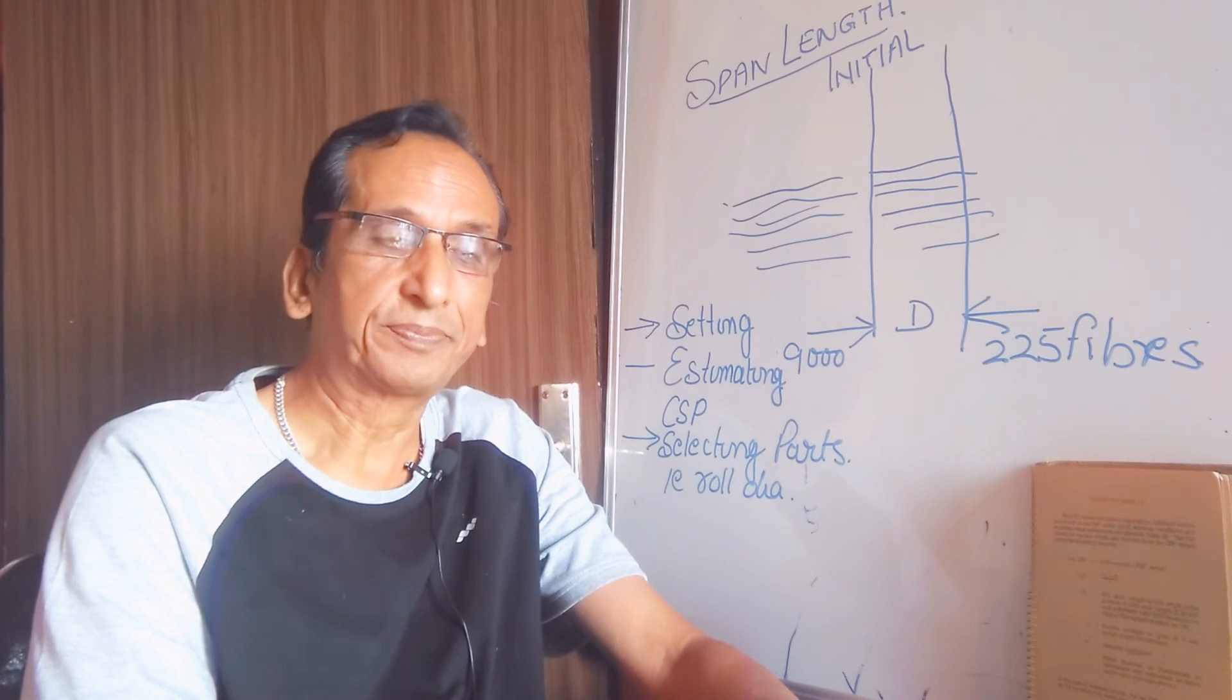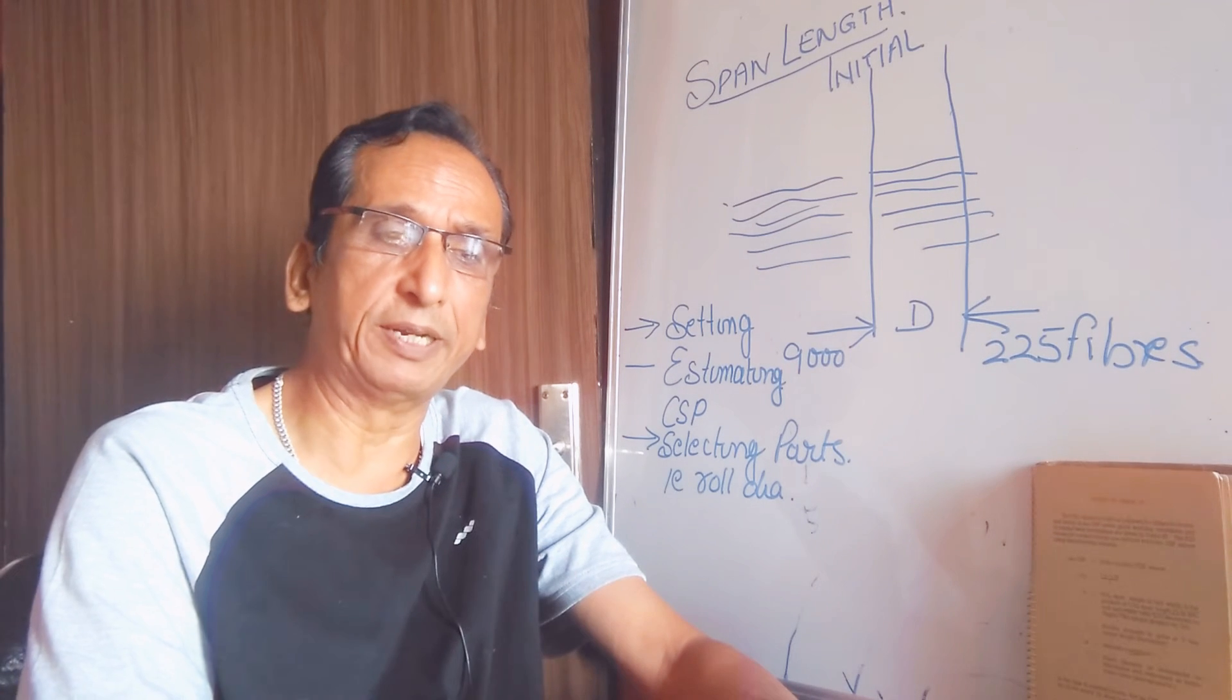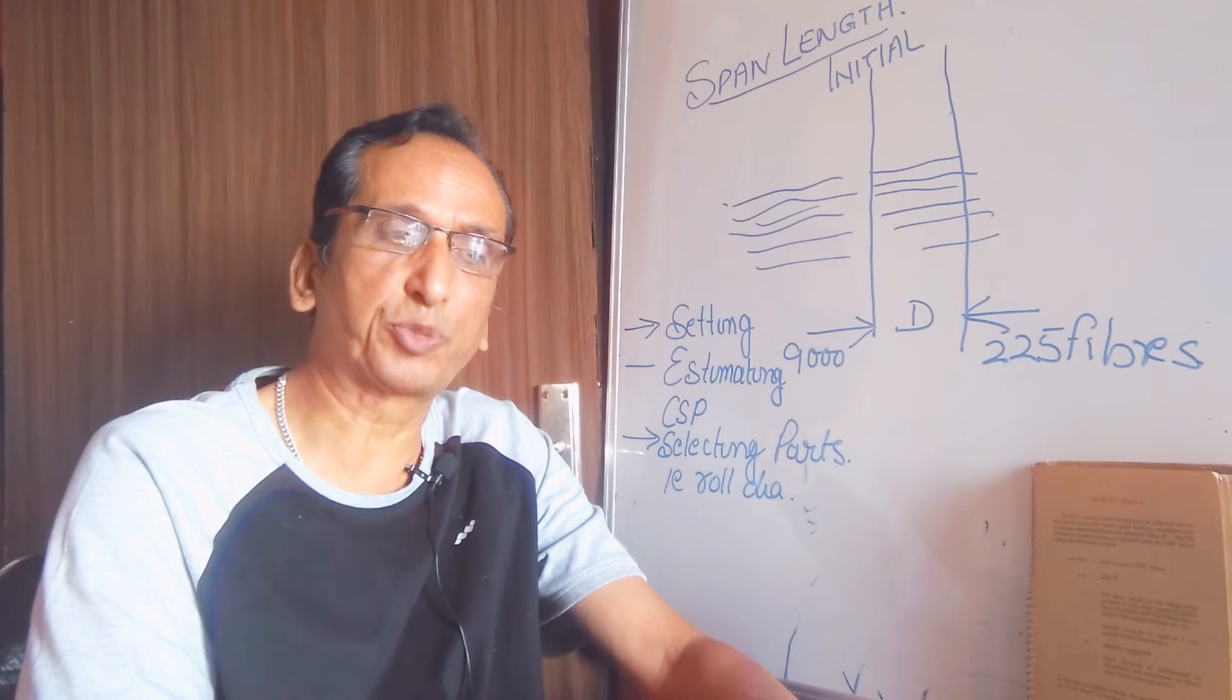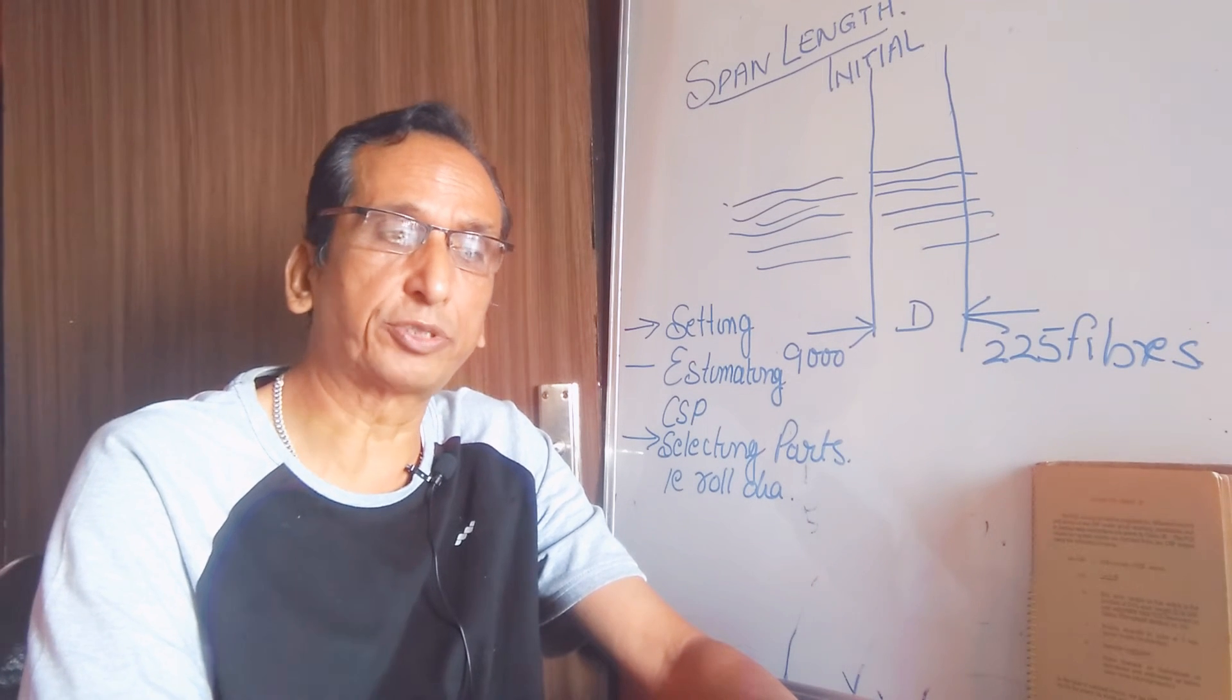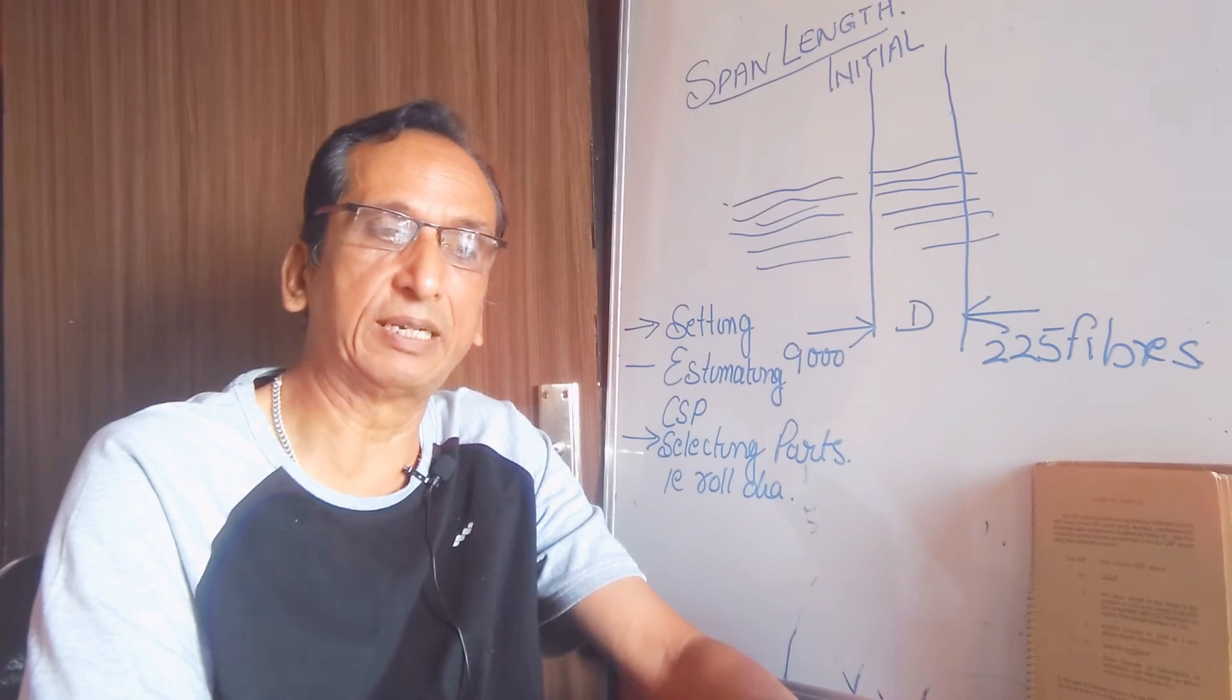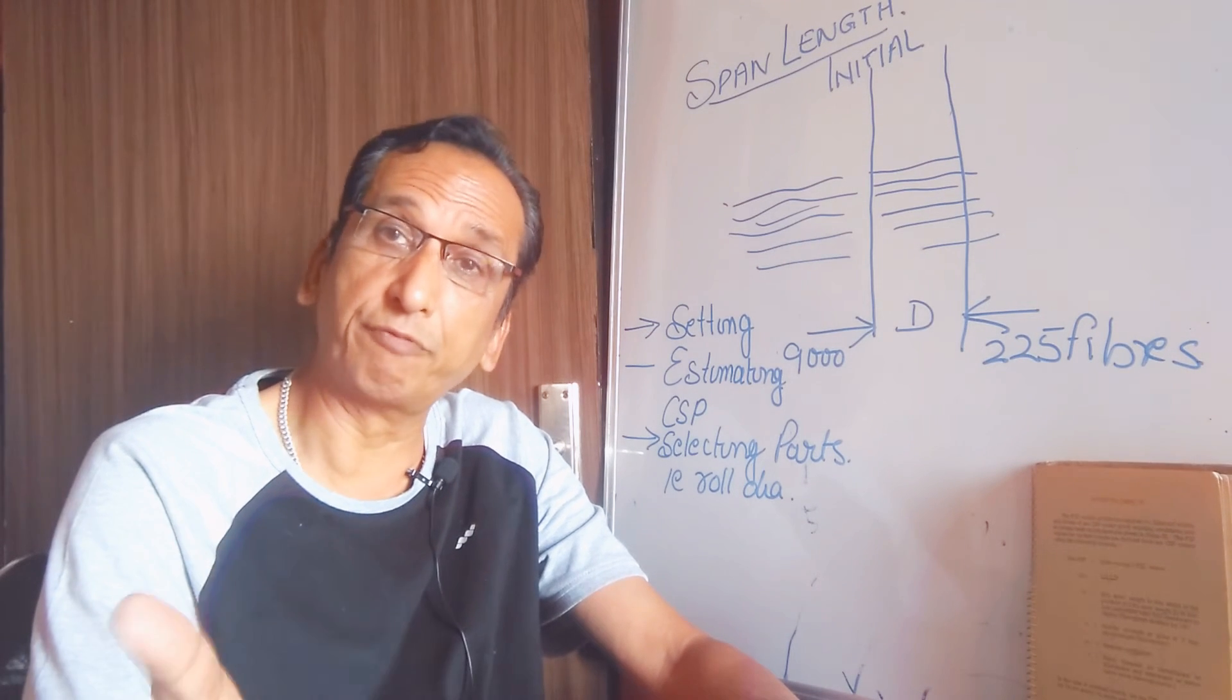the fiber length. The staple diagram is universally accepted as the ultimate expression of the end-to-end length of the fiber. The shorter or accurate test is the laboratory method of expressing fiber length in staple length configuration.